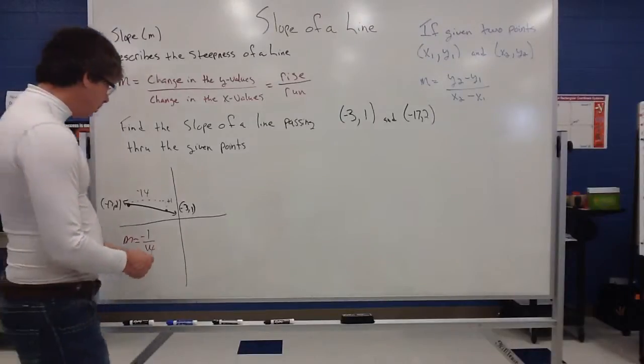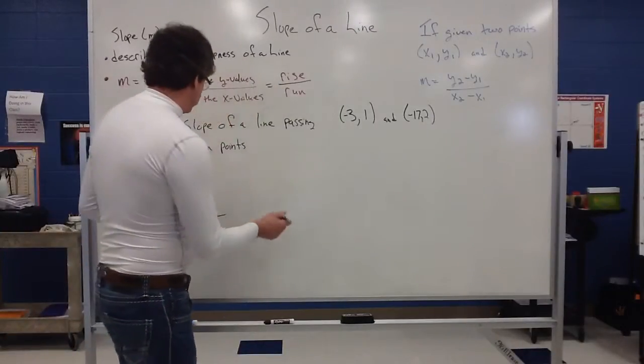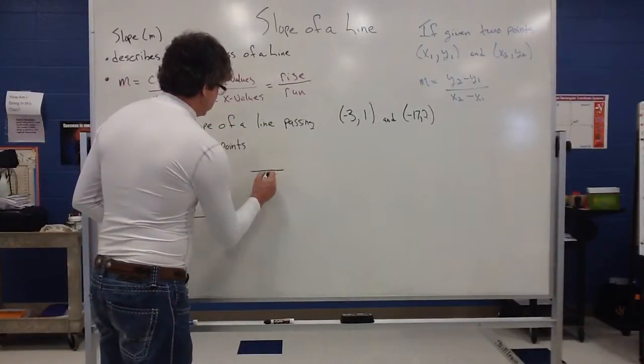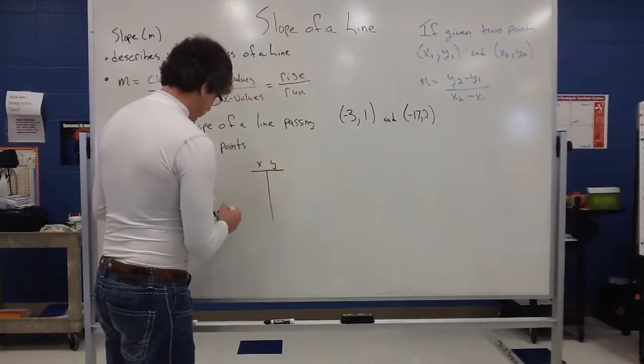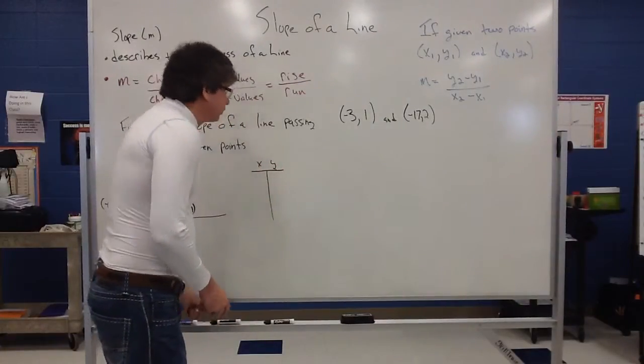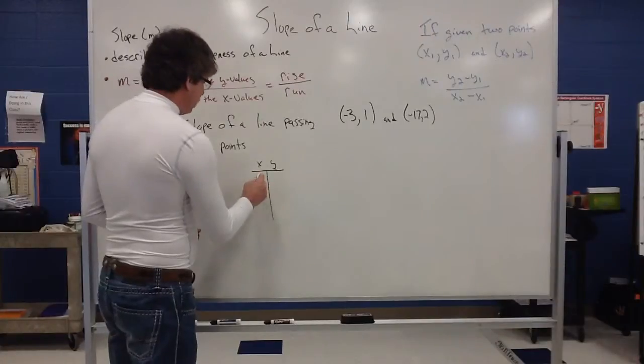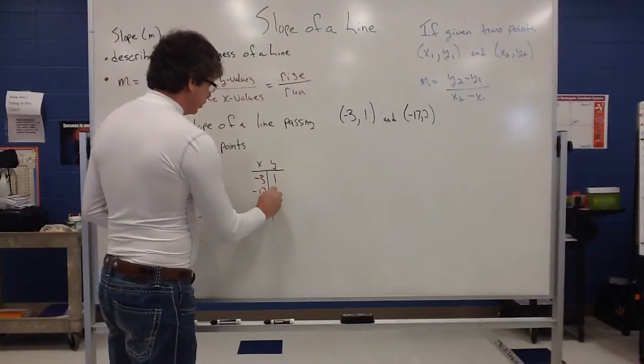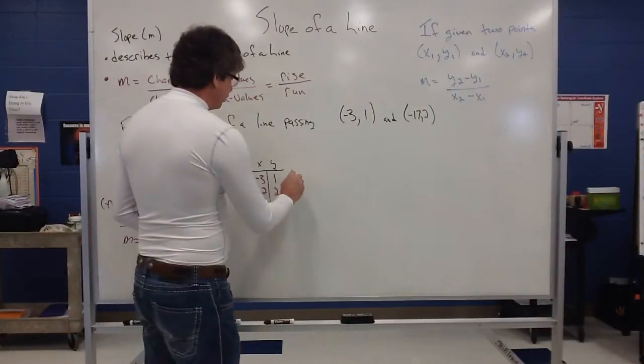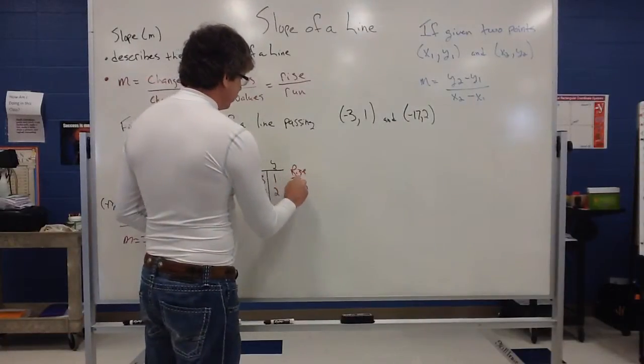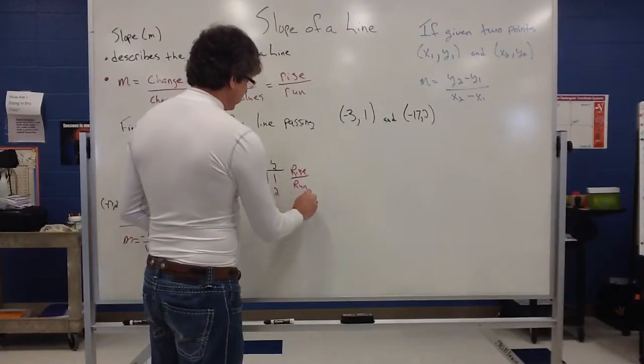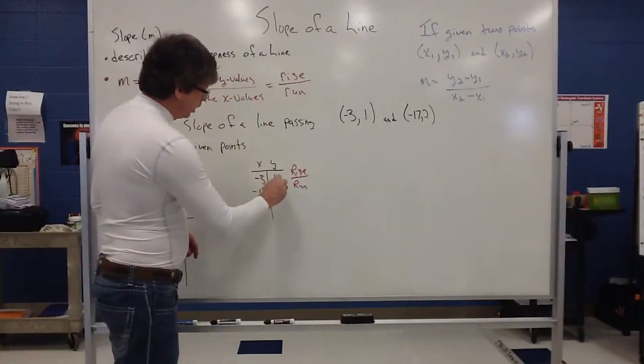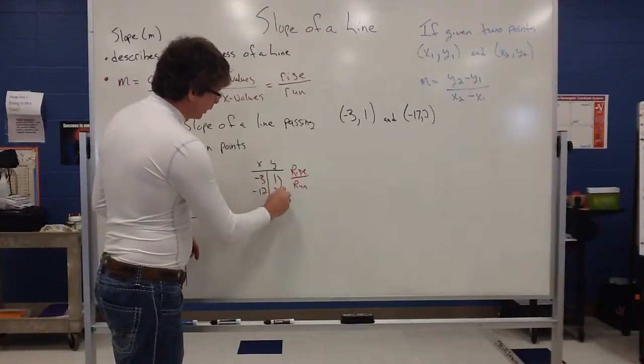Now if I make a table out of this, so I have (-3, 1) is one ordered pair, (-17, 2) is another ordered pair. Remember your slope is this concept of rise over run. So that means you focus on the y's first. If it went from 1 to 2, that looks like an increase of 1.